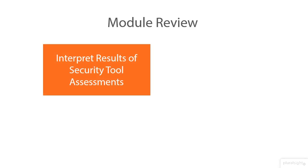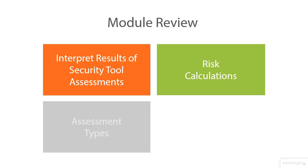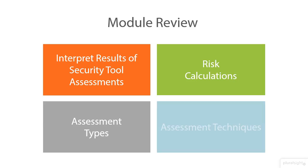In this module we talked about four main areas. We talked about interpreting the results of security tool assessments and the various security tools themselves. We talked about risk calculations, understanding the level of risk and the level of acceptance a business might have towards a specific risk. We also talked about assessment types and the different ways we're going to assess and identify gaps and vulnerabilities within our environment.